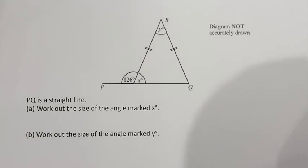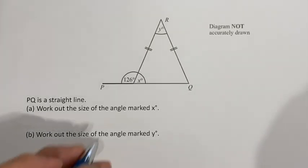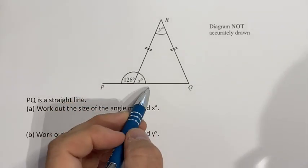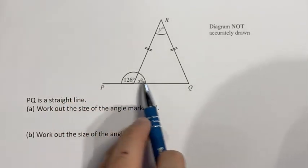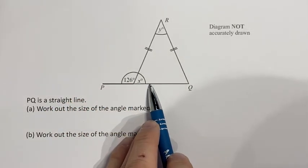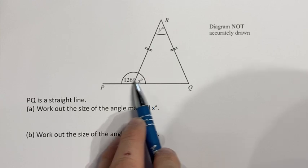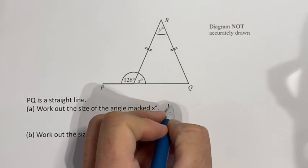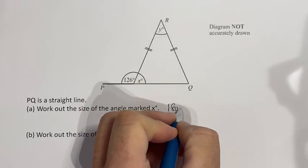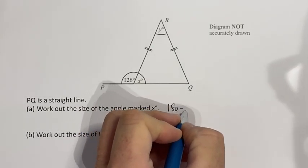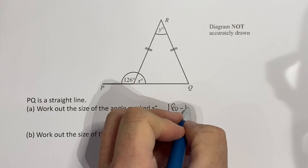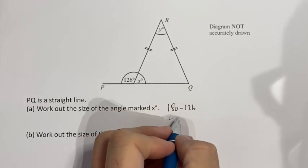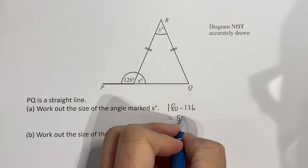Here we have an isosceles triangle. Straight away I can find the value of x because we have a straight line here with two angles on it, so x is 180 take 126, which comes to 54.